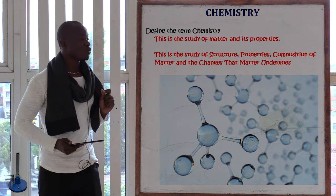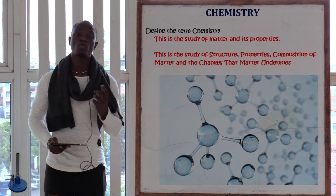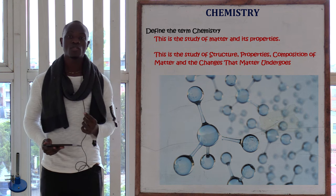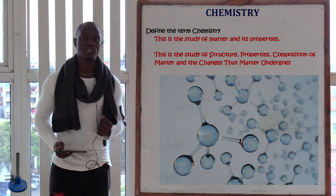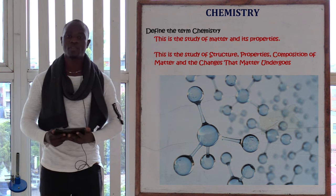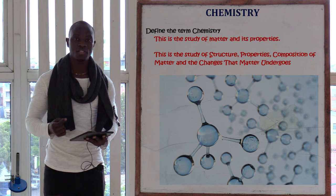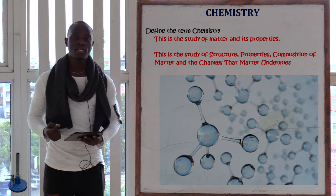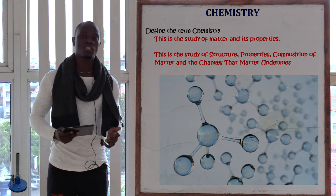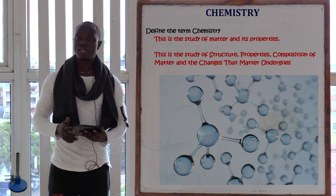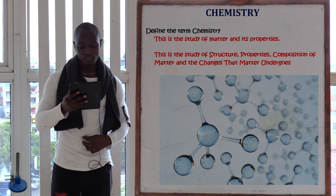If the question asks you to define chemistry and you have been given about two marks, you cannot just say it's the study of matter and its properties. You should give the full definition: chemistry is the study of structure, properties, and composition of matter and the changes that matter undergoes. That full definition is the best definition to give.